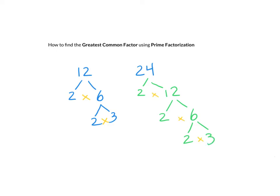To find the greatest common factor using prime factorization, we circle the common largest prime factors first: 3 and 3, and then 2 and 2 on each side. The greatest common factor is a product of the common prime factors, so that would be 2 times 2 times 3. 2 times 2 is 4, and 4 times 3 is 12. So the greatest common factor equals 12.